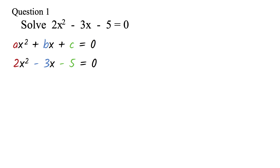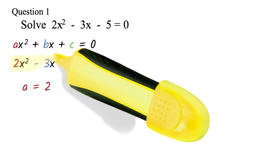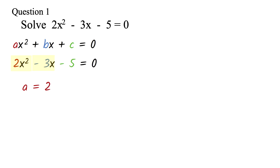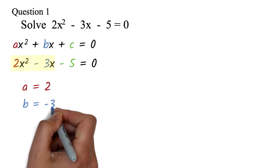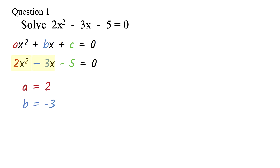In this form, the coefficient of x squared — the number with the x squared — is your a value. Here, the a value is 2. The b is the coefficient of x, or the number with the x. So here, the b is negative 3. Please note that the minus is the sign of the number following it — that's why we have negative 3. Then c is the constant. Here, the c value is negative 5. Again, the minus is the sign of the 5 — that's why we have negative 5.